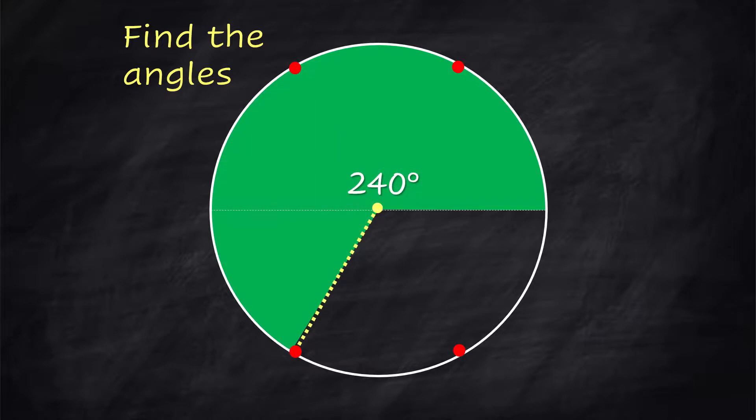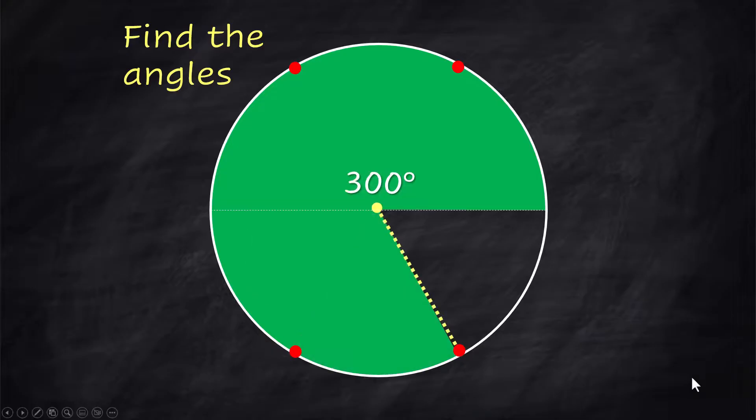The third angle will be 240 degrees. That one's down here in quadrant 3, and I want you to think 180 plus 60. And for the fourth one is 300 degrees, and for this one, you think 360 minus 60 degrees. And let's look at all of them together.